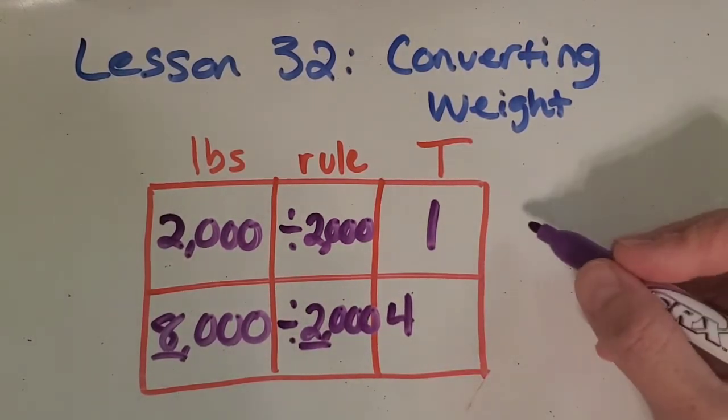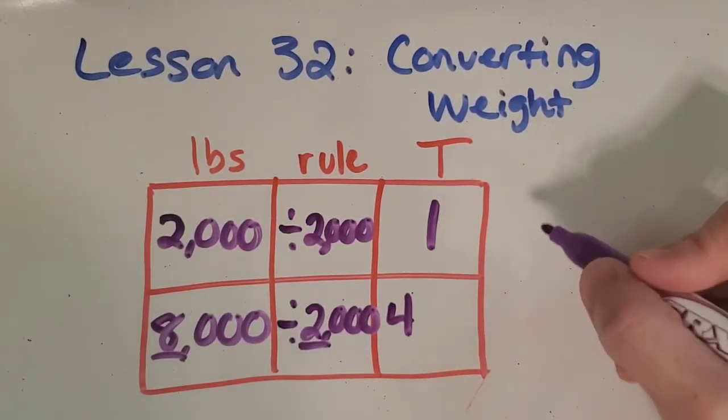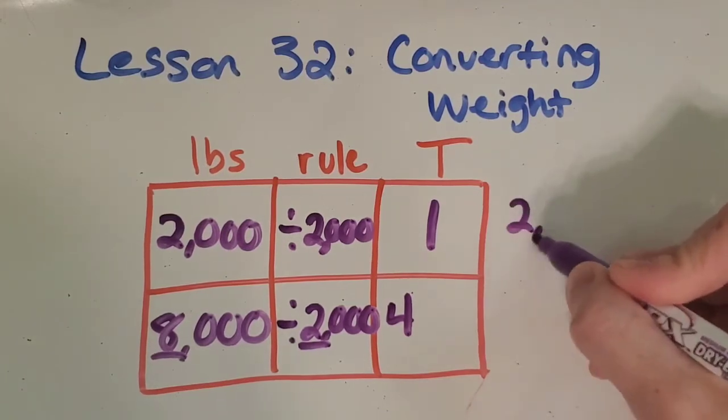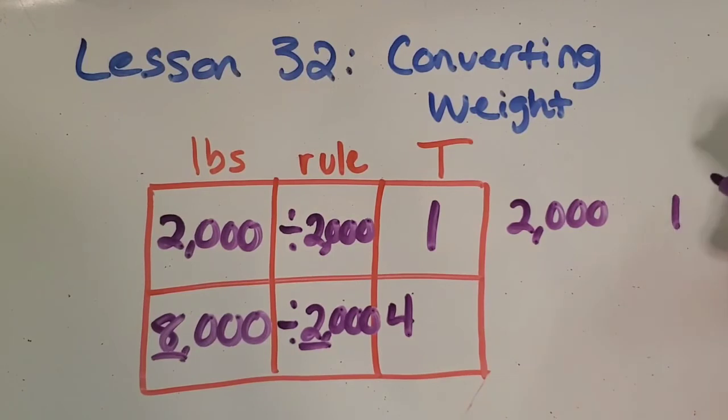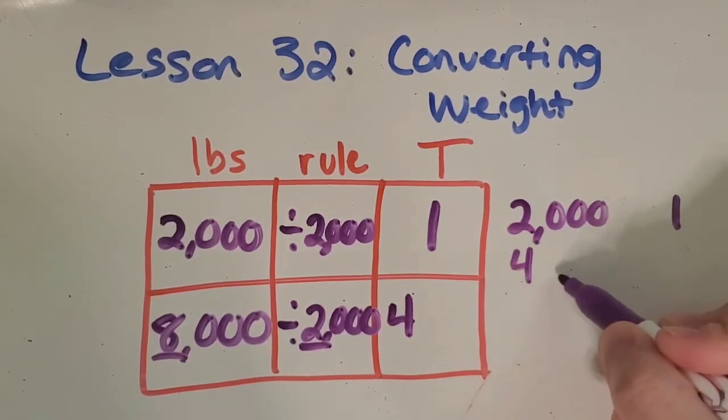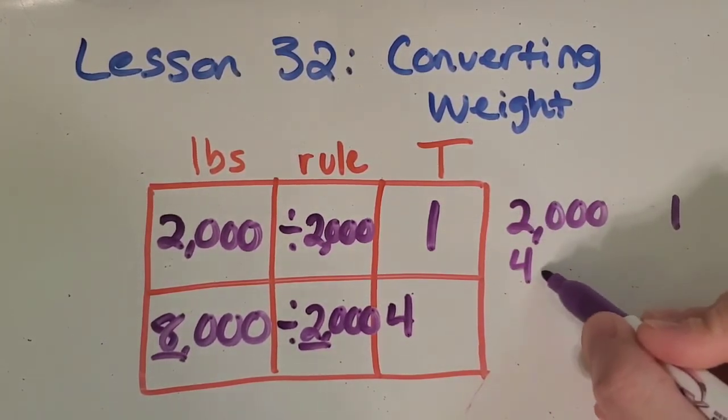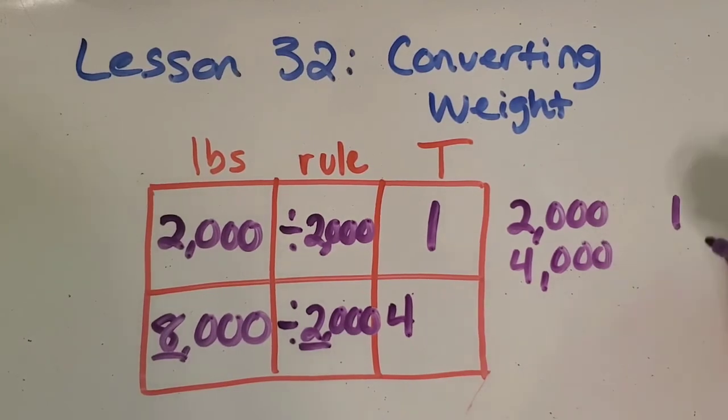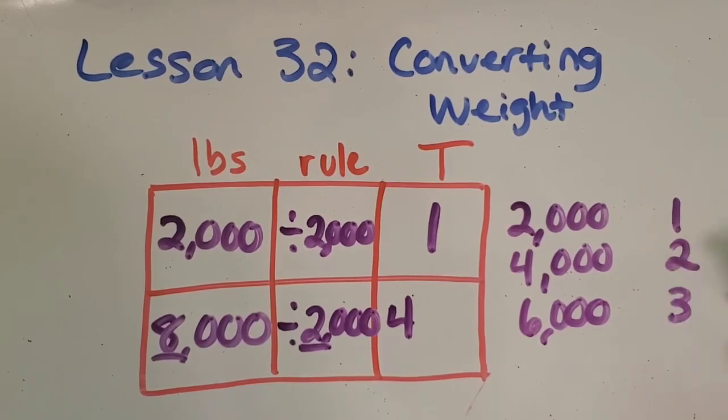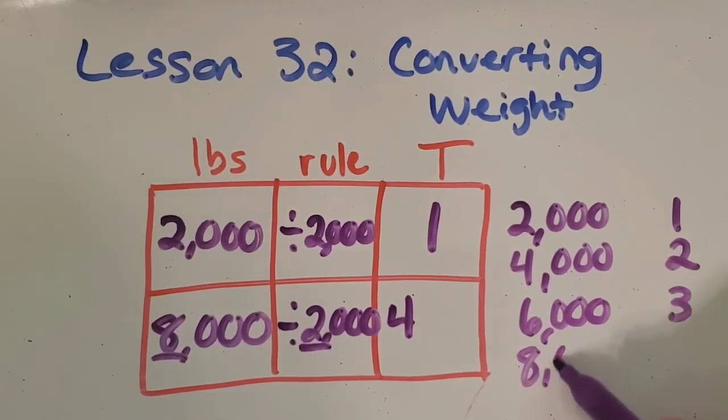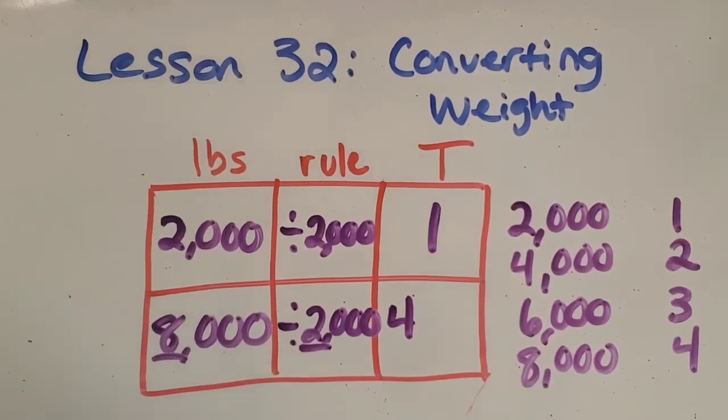The other thing you can do is just think about what's reasonable. If 2,000 pounds is 1 ton then you could count by 2,000 you know kind of like you count by twos. 4,000 is 2 tons. 6,000 is 3 tons and then of course 8,000 would be 4 tons. Okay great job!